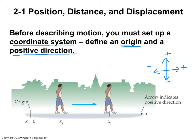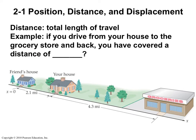So for instance, in this problem down here, you can see the origin is marked right here, and then this is the positive direction.